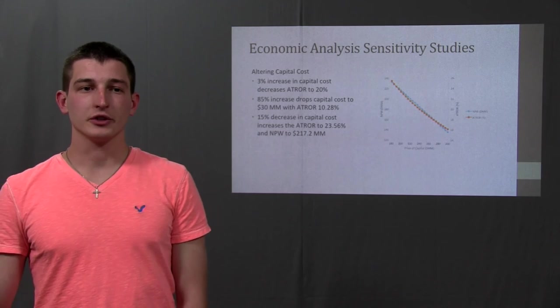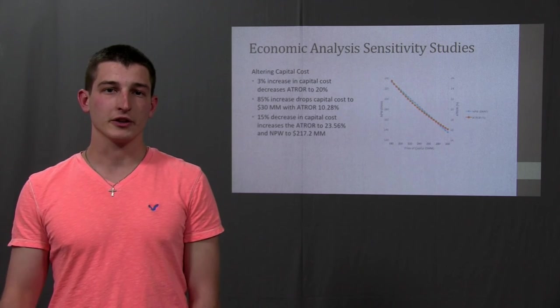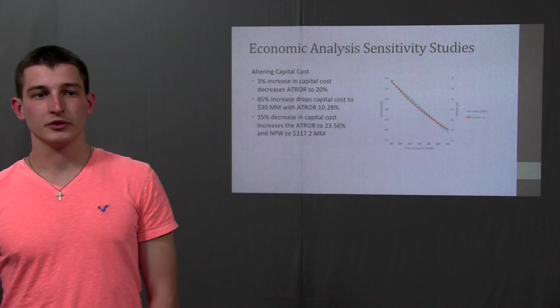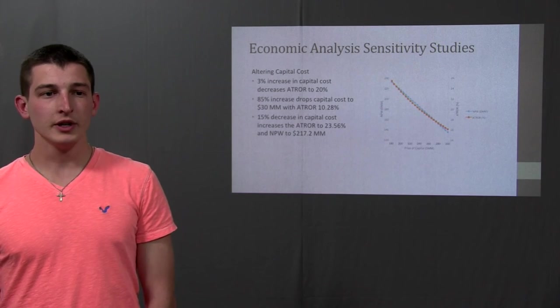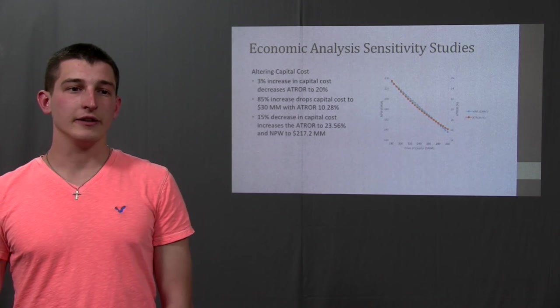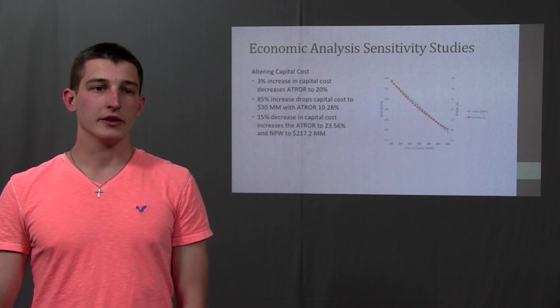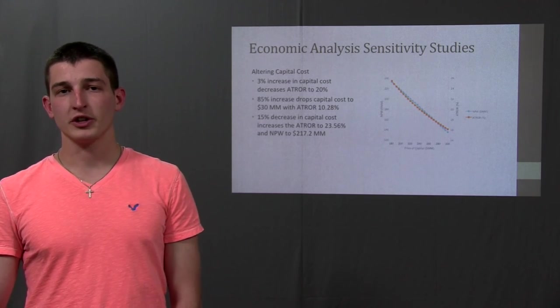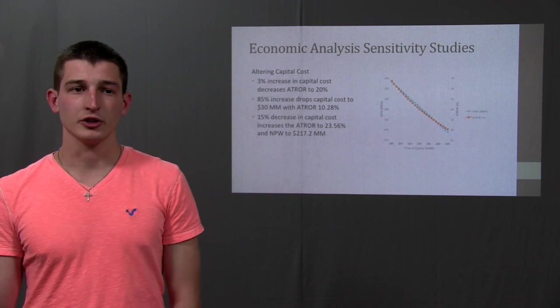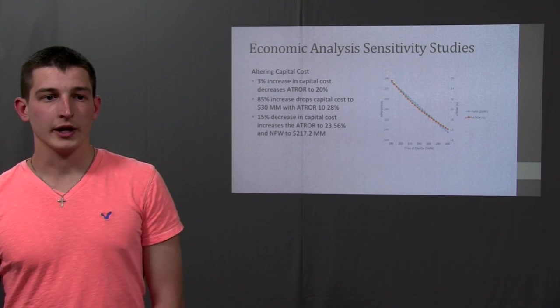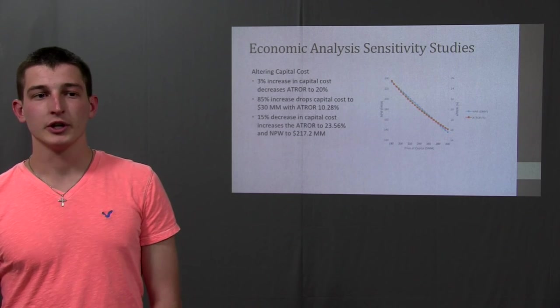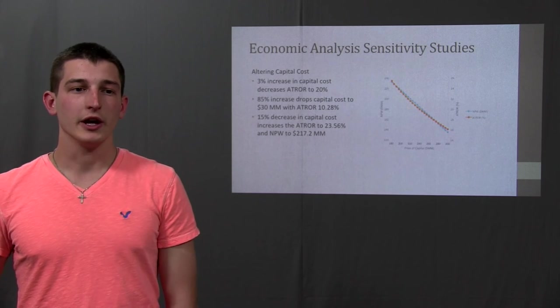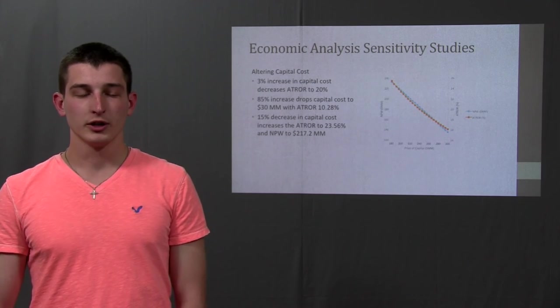And then the final sensitivity study that was done was altering the capital costs to see how that would affect the net present worth and the ATRO. A 3% increase in capital costs would drop the ATRO to 20%. And it would take an 85% increase in capital to make the net present worth value to 30 million. But this would also decrease the ATRO to 10% roughly, which is a very unacceptable number. And a 15% decrease in capital costs obviously increases the ATRO and net present worth to 23.56% and 217.2 million respectively.